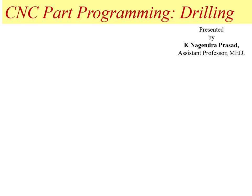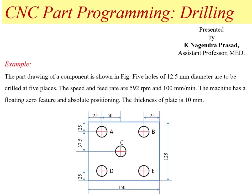Hello everyone. Today I am going to discuss how to write CNC part programming for a drilling operation. This will be explained with one example problem. The part drawing of the component is as shown in the figure. We have to make 5 holes at different positions as shown in the diagram. Diameter of the hole is 12.5 mm, speed is 592 rpm, feed rate is 100 mm per minute, and the plate thickness is 10 mm.